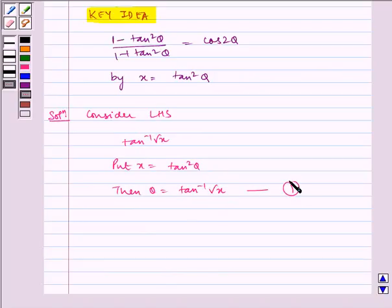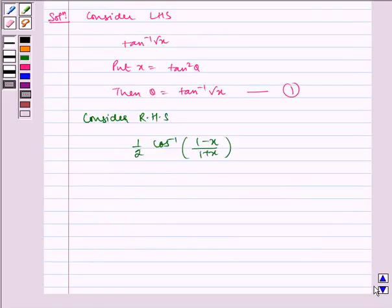Let us name this as equation 1. Now consider RHS, half cos inverse of 1 minus x by 1 plus x, which is equal to half cos inverse of 1 minus tan square theta by 1 plus tan square theta.